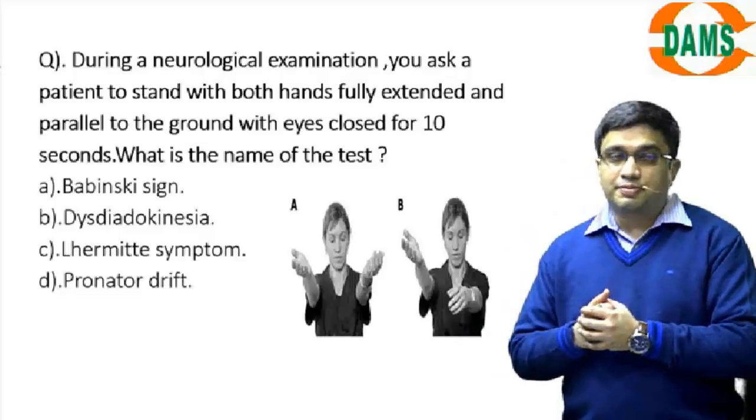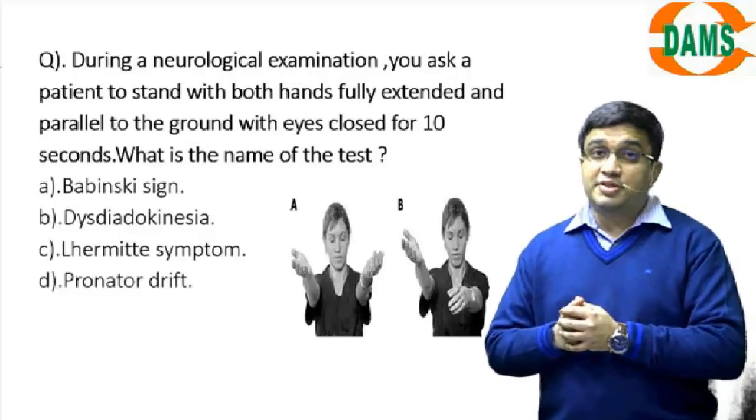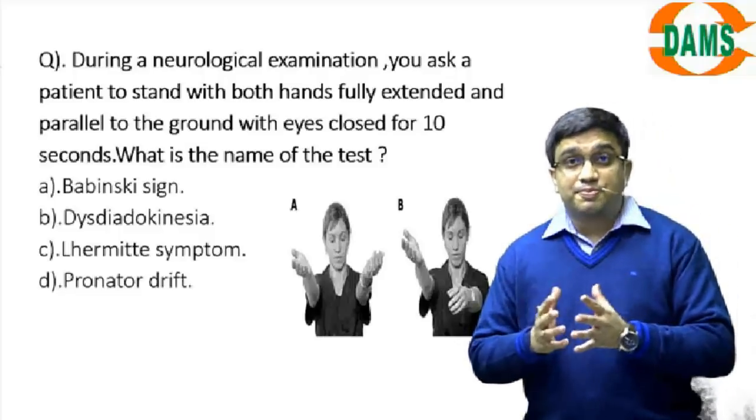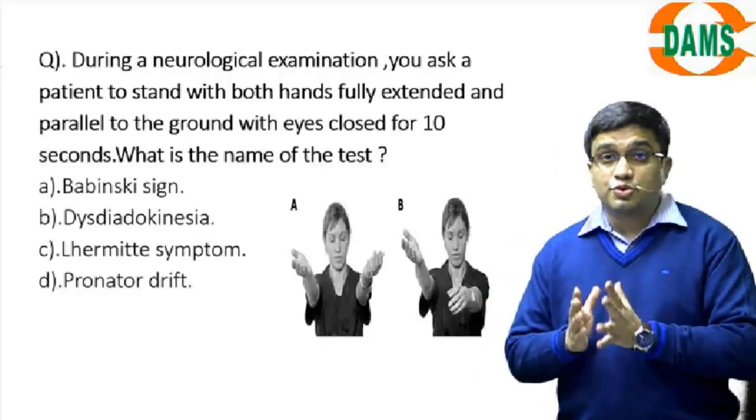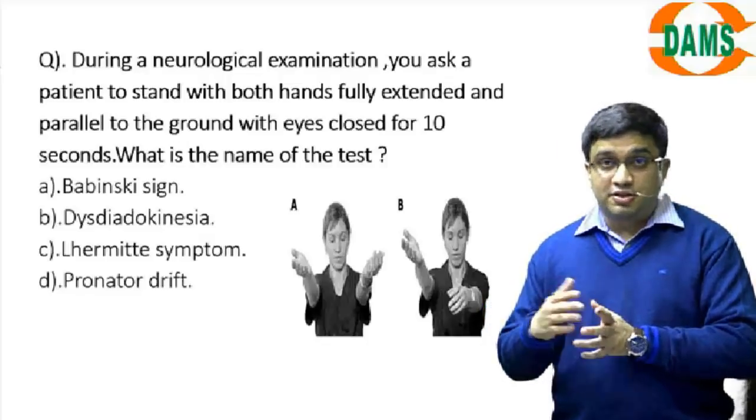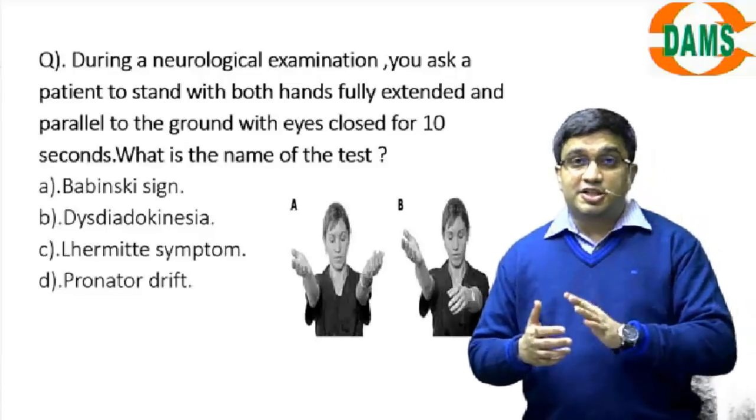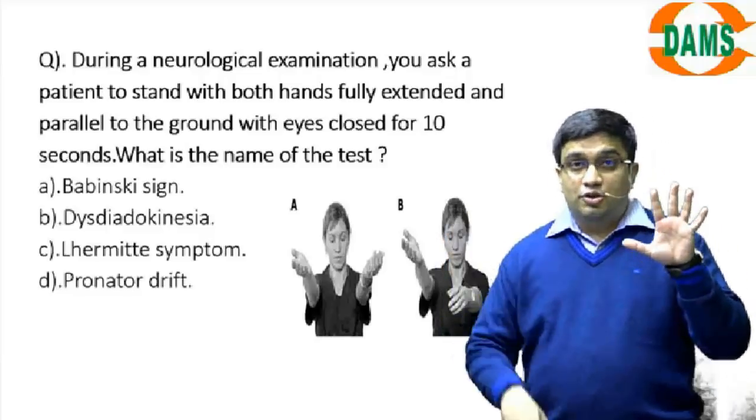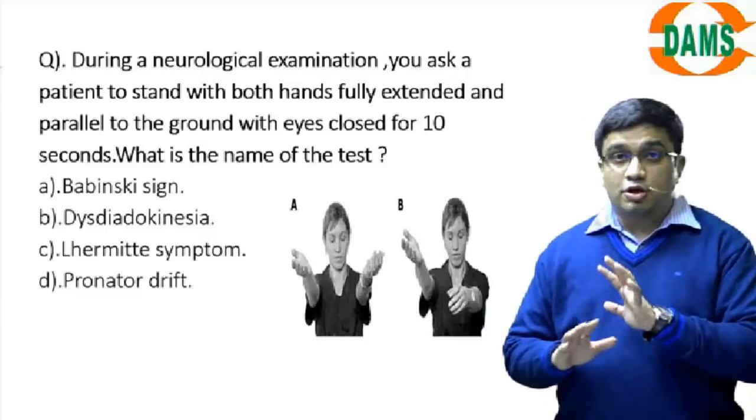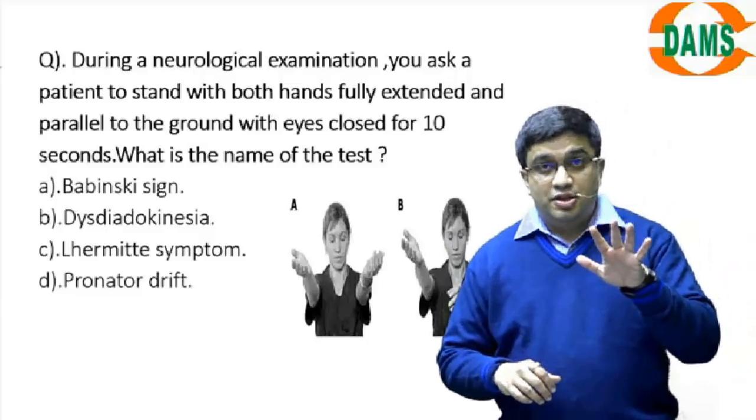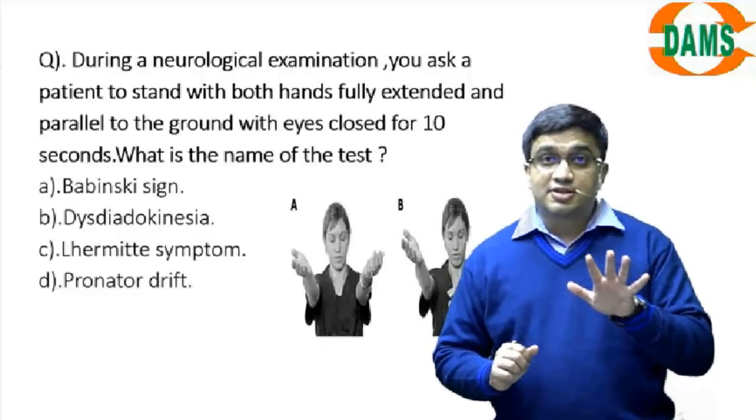And the most popular Babinski sign, that is an extensor plantar. We try to stroke the sole of the patient's feet with the blunt end of knee hammer or maybe a softer version key from lateral to the middle aspect. And if you find the toes all go down, that's a normal flexor plantar. If the big toe extends and all the small toes fan out, there is an extensor plantar.